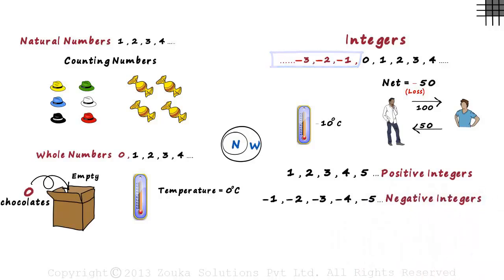We can also define natural numbers as positive integers. Then what about zero? Well, it's neither positive nor negative.